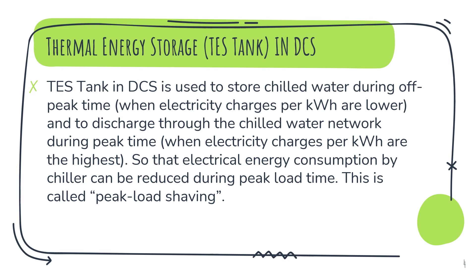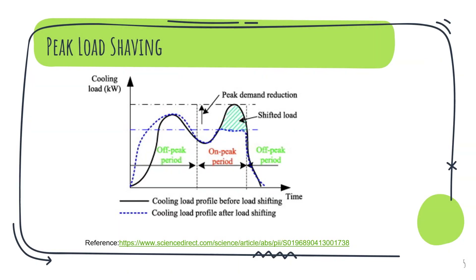A general representation of the peak load shaving is provided in the next slide. Comparing the graph, we can see that peak load during the on-peak period is reduced. This is achieved with the use of TES tanks. Thus we can reduce the electrical load consumption during on-peak periods and also reduce the total number of chiller requirements.